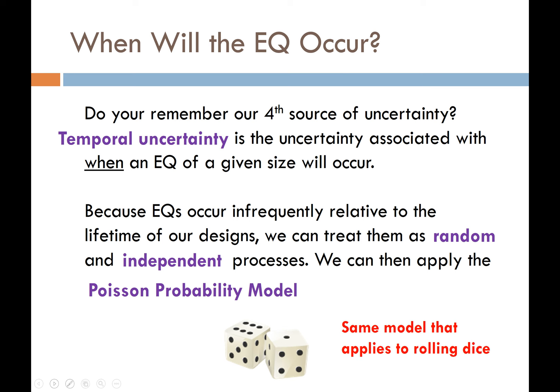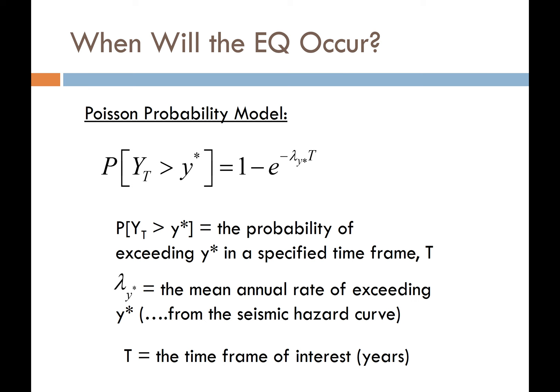Imagine a gambler rolling dice once per day. What was rolled yesterday has no impact on what will be rolled today — every day is a new, independent roll with the same likelihood of winning or losing. That's how we treat earthquakes under the Poisson model: every single day is a new day, and it doesn't matter whether an earthquake occurred yesterday, 10 years ago, 50 years ago, or 100 years ago. The Poisson probability model lets us relate the probability of exceeding a ground motion level in a specified time frame t using: P = 1 - e^(-λ·t), where λ is the mean annual rate of exceedance from the seismic hazard curve.